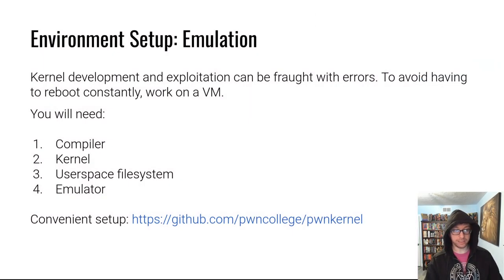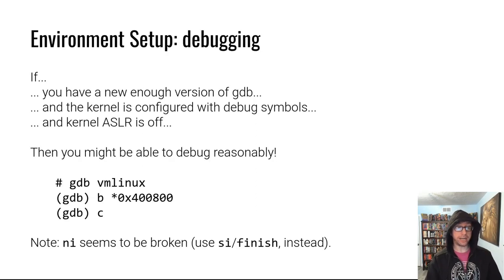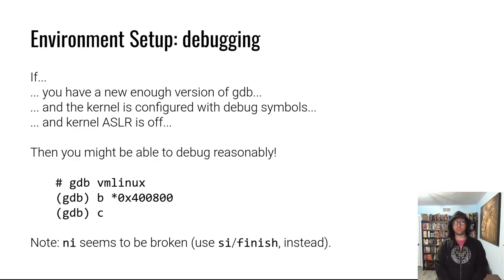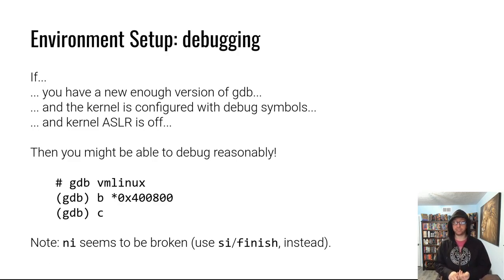Let's talk about debugging. When you start doing exploitation inside this virtual machine, you'll need to debug. Luckily, we have a new enough version of GDB, we compile the kernel with debug symbols, and we've turned off address space randomization in the kernel for this module — at least for the first couple of challenges you'll interact with.